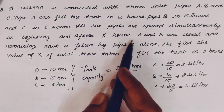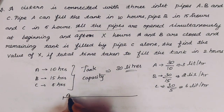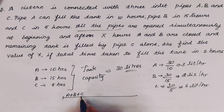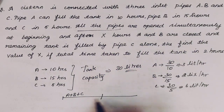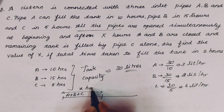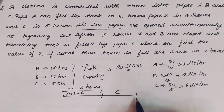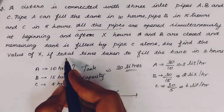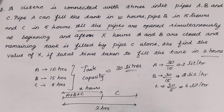We need to draw the diagram to solve easily. First, 3 pipes A, B and C are open at the beginning. After a certain time X hours, A and B are closed, and the remaining liters are filled by C alone. Total time is 2 hours.